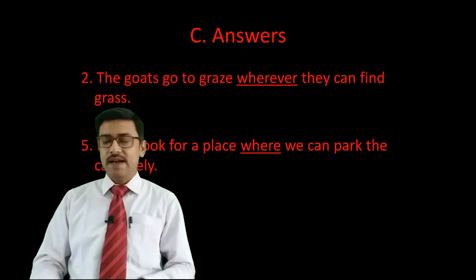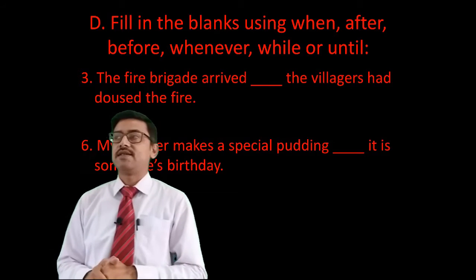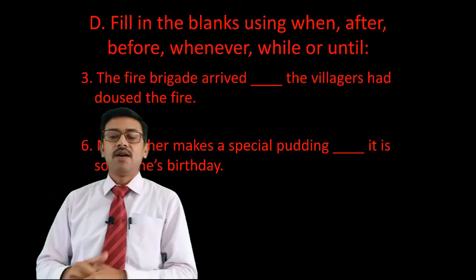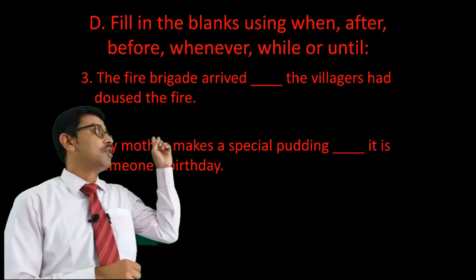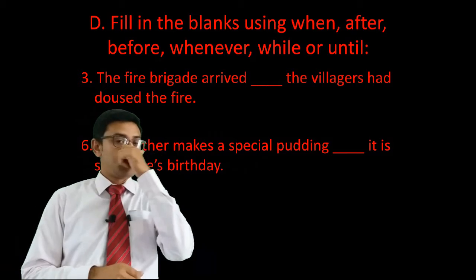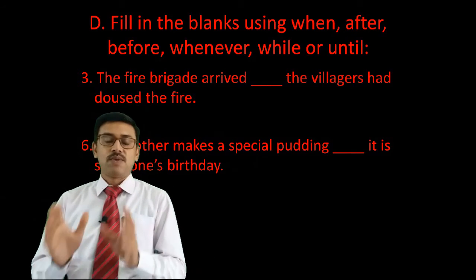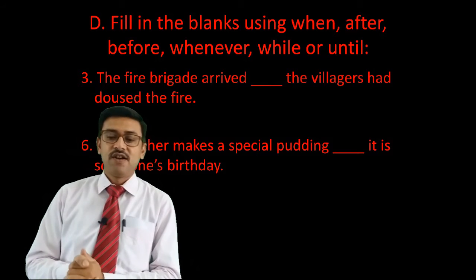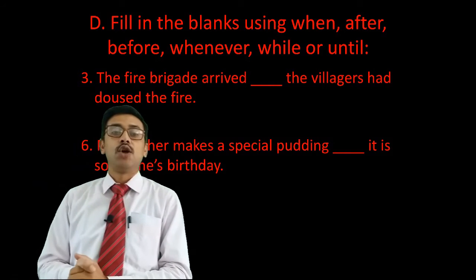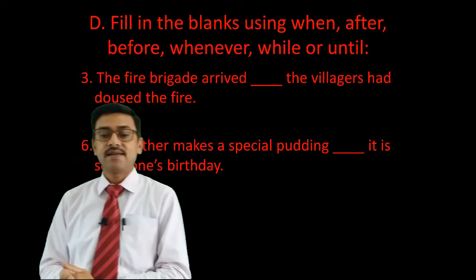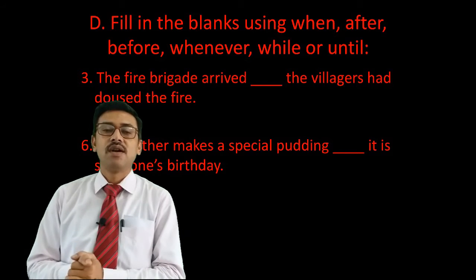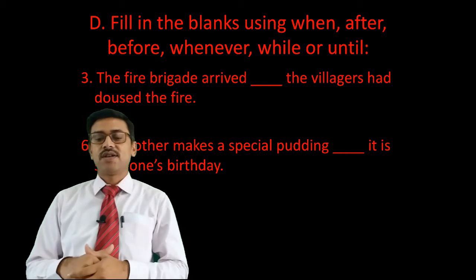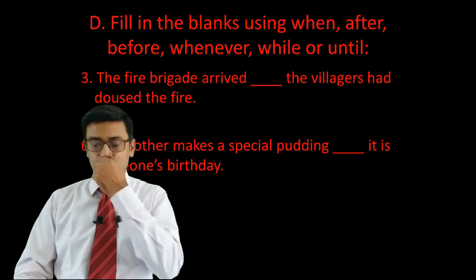Next is exercise D on page 96 and 97: fill in the blanks using when, after, before, whenever, while, or until. These are also subordinating conjunctions. I have picked two sentences from this exercise. Sentence number three: 'The fire brigade arrived ___ the villagers had doused the fire.' Sentence number six: 'My mother makes special pudding ___ it is someone's birthday.' Let us see how to answer these.